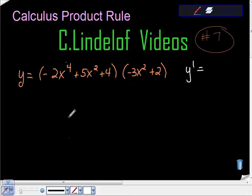We're given this function: y equals negative 2x to the fourth plus 5x squared plus 4, times the quantity negative 3x squared plus 2, and we're asked to find the derivative y prime.